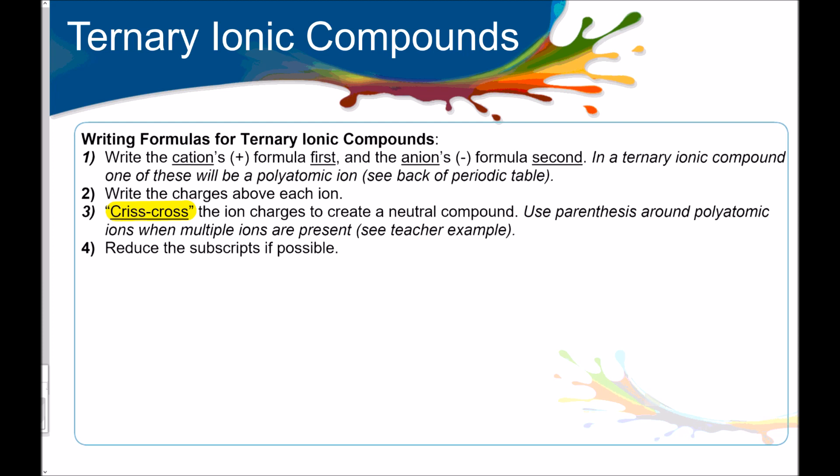Write the charges above each ion. Then step three, we're gonna crisscross the ion charges to create a neutral compound, just like binary ionic, but here's the extra part. Use parentheses around polyatomic ions when multiple ions are present. I'm gonna show you that, and it's really gonna help you understand what I mean by that. And then step four, reduce the subscripts if possible. So, pretty similar to binary ionic, except for that underlined part where we might need to use parentheses.